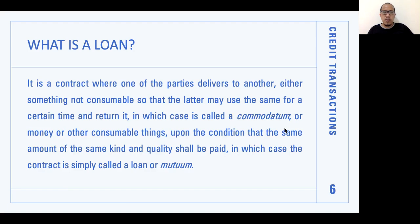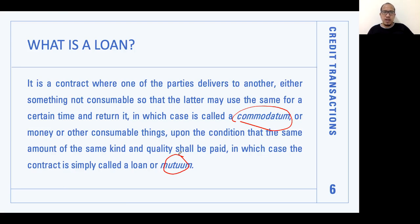So what is a loan? A loan is a contract where one of the parties delivers to another either something not consumable so that the latter may use it for a certain time and return it — in which case it is called commodatum — or money or other consumable things upon the condition that the same amount of the same kind and quality shall be paid — in which case the contract is called a loan or mutuum. Under the Civil Code, a loan has two types: commodatum and mutuum. The Tagalog equivalent of commodatum is 'pahiram.' Borrowing a bicycle, for example — you use it and then return the exact same item.